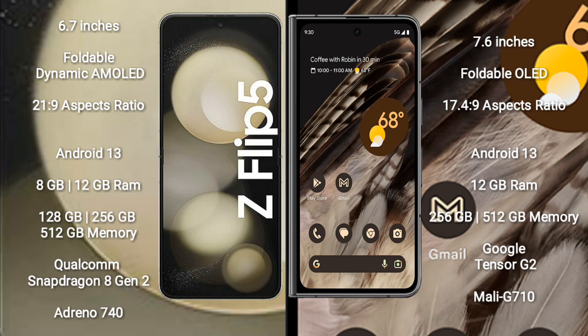The Google Pixel Fold comes with 12GB of RAM and 256GB or 512GB of internal storage. It is powered by the Google Tensor G2 processor with a Mali G710 GPU.